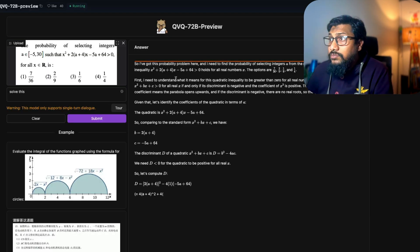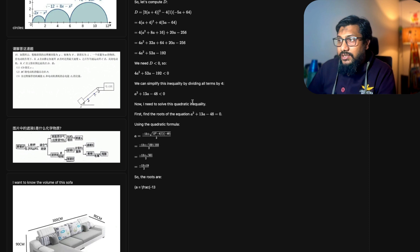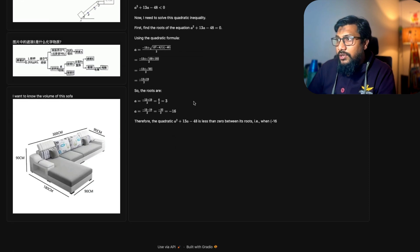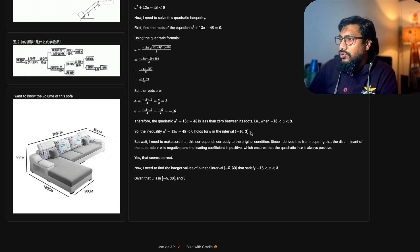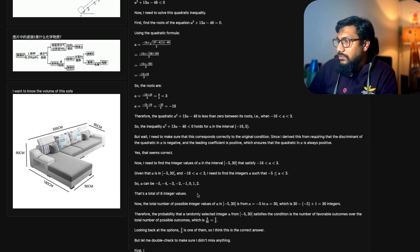I've got this probability problem here. I need to find the probability of selecting integers from this range. And it goes on and on. I don't have hope that it might solve it correctly. Oh yeah, it did.